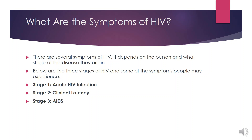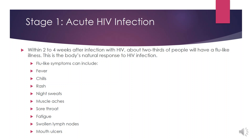Stage one is acute HIV infection. Within two to four weeks after infection with HIV, about two-thirds of people may have flu-like illness, which is the body's natural response to the infection. Flu-like symptoms may include fever, chills, rash, night sweats, muscle aches, sore throat, fatigue, swollen lymph nodes, and mouth ulcers. These symptoms can last from a few days to several weeks, but some people have no symptoms at all, so it often goes untreated and undiagnosed.